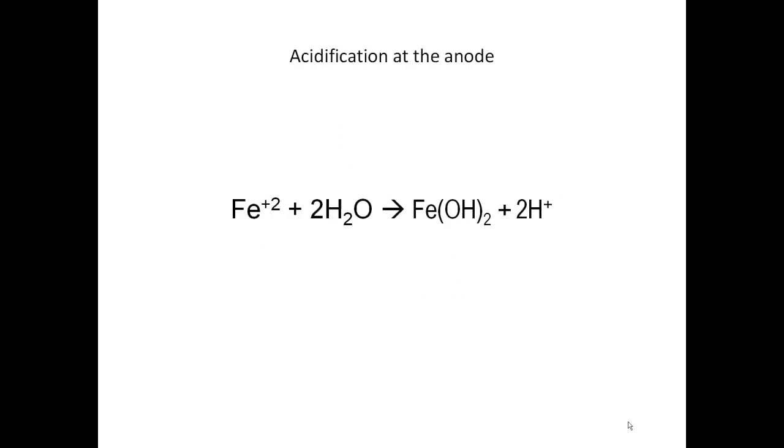Something else is going on—acidification at the anode. Notice the iron doesn't always diffuse all the way to the water drop. Sometimes it just attacks water, breaks it down, and forms rust plus 2H⁺, becoming acidic. So that water wherever the iron is dissolving becomes acidic.